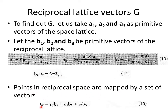Points in reciprocal space are given by the reciprocal lattice vectors. G is equal to v1·b1 plus v2·b2 plus v3·b3, where b1, b2, b3 are the primitive reciprocal lattice vectors and v1, v2, v3 are integers — which are actually the hkl values. All possible combinations give the set of G vectors we call the reciprocal lattice vectors.